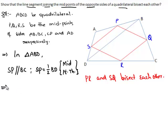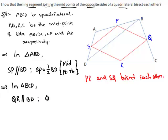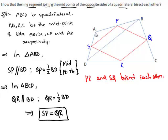If we draw the diagonal AC, we get two more triangles: triangle ACB and triangle ACD. In these two triangles, applying the midpoint theorem similarly, we get SR is equal to PQ. So looking at the diagram, we have SP equal to QR, and PQ equal to SR.